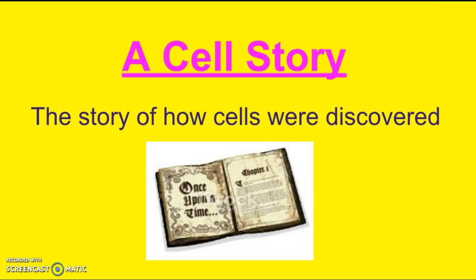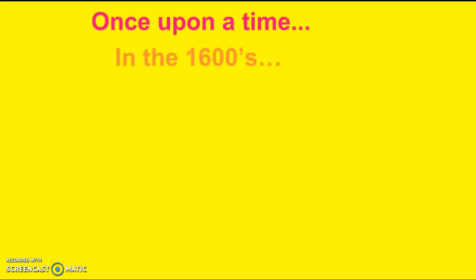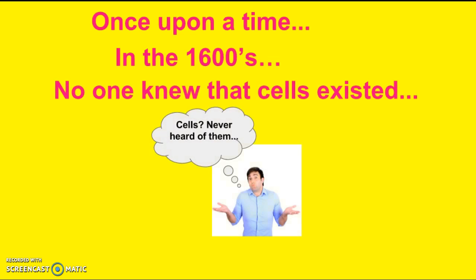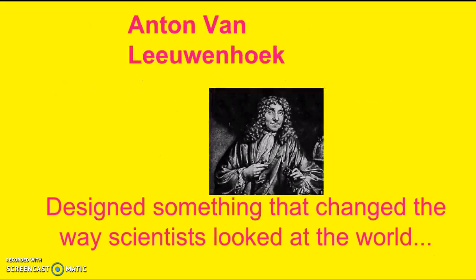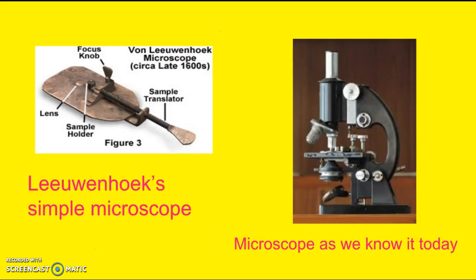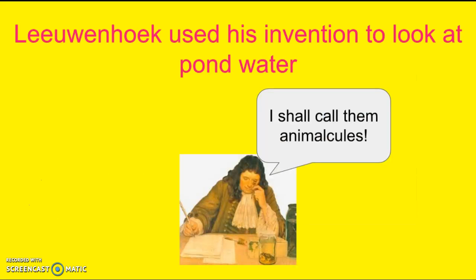So cells — how were they discovered? Once upon a time, in the 1600s, no one knew that cells existed, until one day a man by the name of Anton van Leeuwenhoek designed something that changed the way scientists looked at the world. He designed the first simple microscope. Leeuwenhoek used his invention to look at pond water. He called the little animals that he saw swimming around — what he thought were animals — he called them animicules.